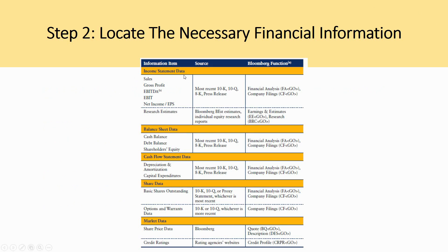For income statement data such as sales, gross profit, and EBITDA, you can look at the 10-Ks and 10-Qs. For balance sheet information, similarly you use 10-Ks and 10-Qs. For share price data and current credit ratings, you can go to rating agency websites or Bloomberg. That's really what an analyst does — they're a jack of all trades, hopping between different information sources and bringing them all together to sum up in a report.